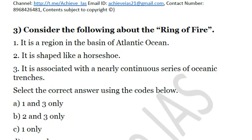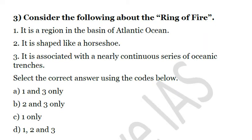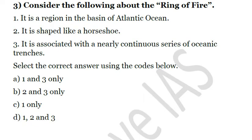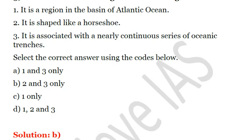Third question: Consider the following about the Ring of Fire. First, it is a region in the basin of the Atlantic Ocean. Second, it is shaped like a horseshoe. Third, it is associated with a nearly continuous series of oceanic trenches. The first is clearly wrong — the Ring of Fire is not in the Atlantic Ocean; it is in the basin of the Pacific Ocean. The second is correct — it is horseshoe-shaped and approximately 40,000 kilometers in extent. The third is correct — it is associated with a nearly continuous series of oceanic trenches, which are further associated with volcanism and earthquakes. About 70–80% of the world's active and dormant volcanoes and 90% of the world's earthquakes occur here. The answer is B — second and third only.